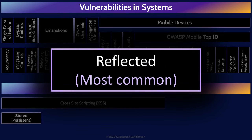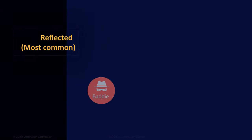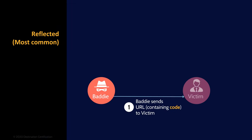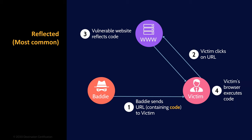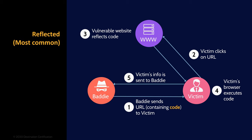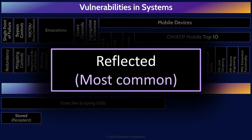Reflected cross-site scripting works a little differently — the malicious code is only reflected back to one specific user. An attacker sends the victim an email, perhaps as a phishing attack, containing a URL with malicious JavaScript code embedded in it. The user clicks the URL, sending the request to the server. The server then displays a webpage containing the malicious code from the URL, effectively reflecting it back to the user, and the user's browser executes the malicious code. You should remember that reflected cross-site scripting is the most common form of cross-site scripting.